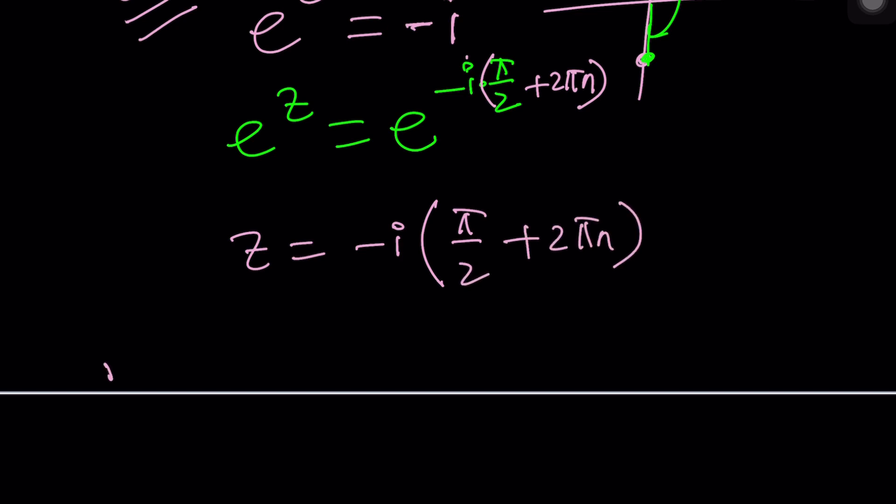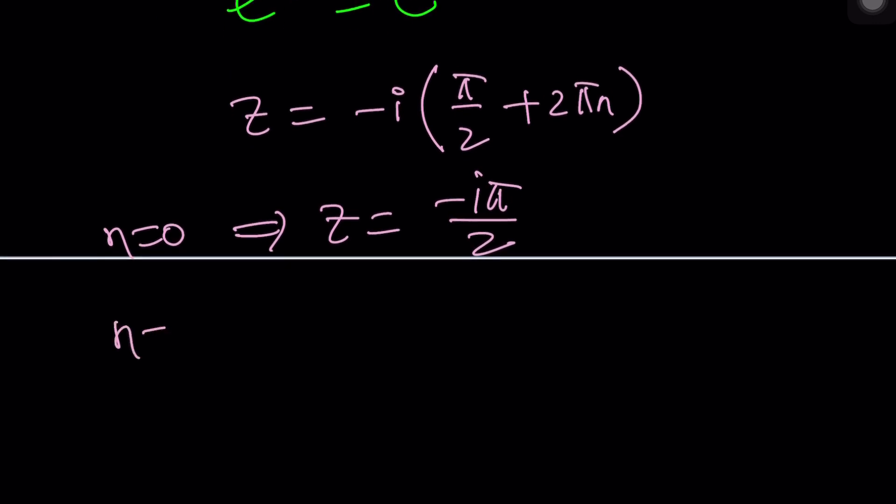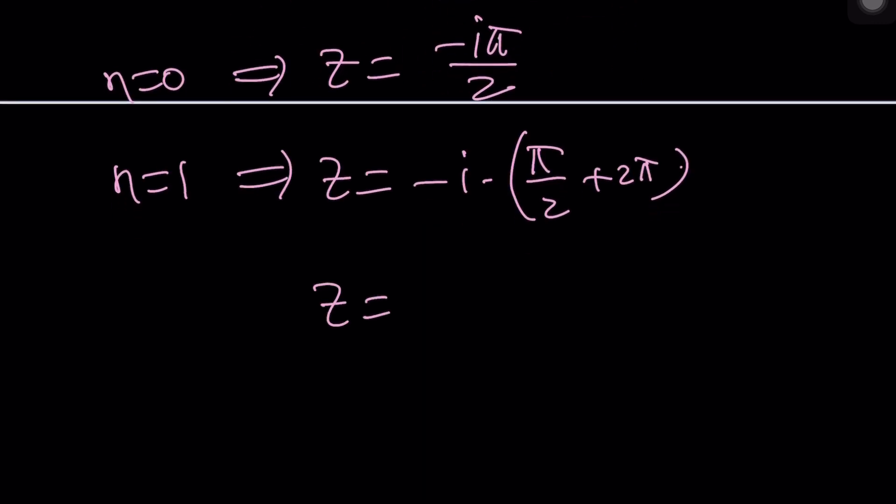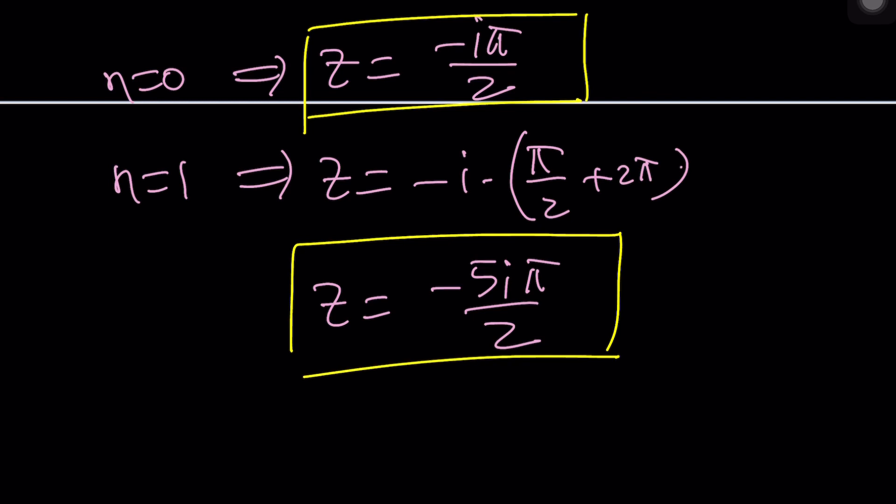What does that mean? It means if n is zero, z is going to be negative i pi over two, which is what we found before. If n is equal to one, then z is going to be negative i times pi over two plus two pi, which is five pi over two. So z is going to be negative five i pi over two. And of course, these solutions are going to be two i two pi apart.